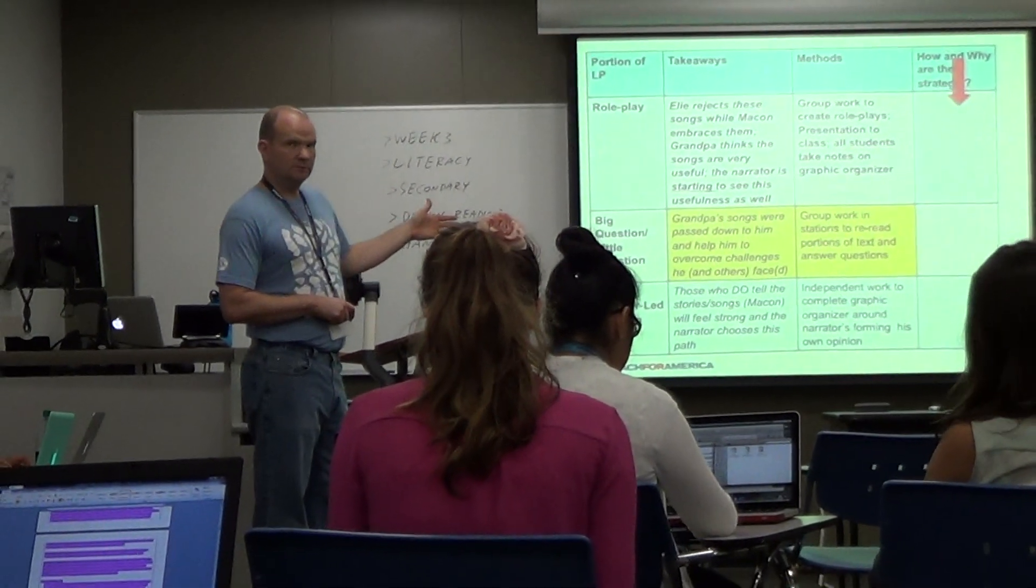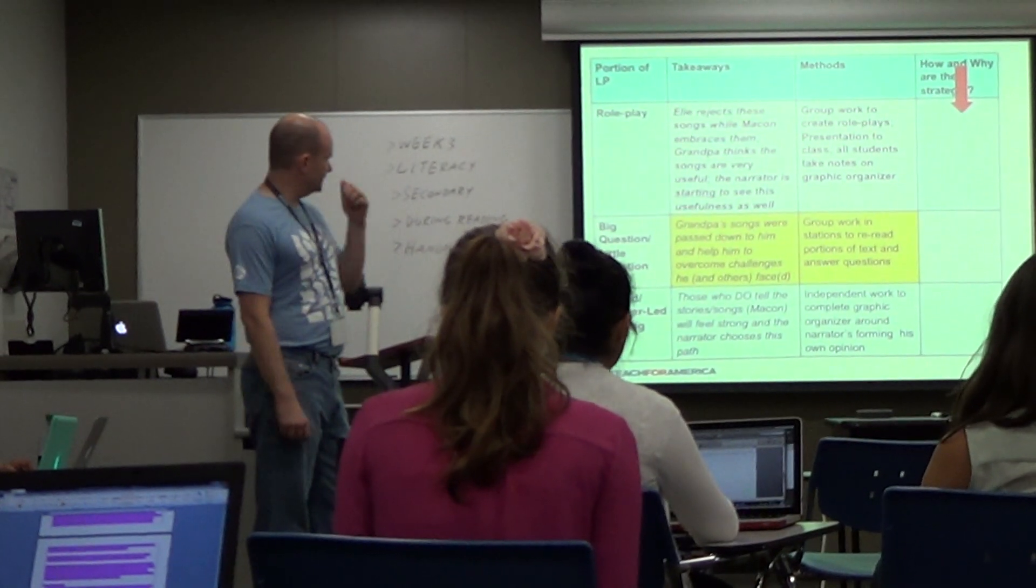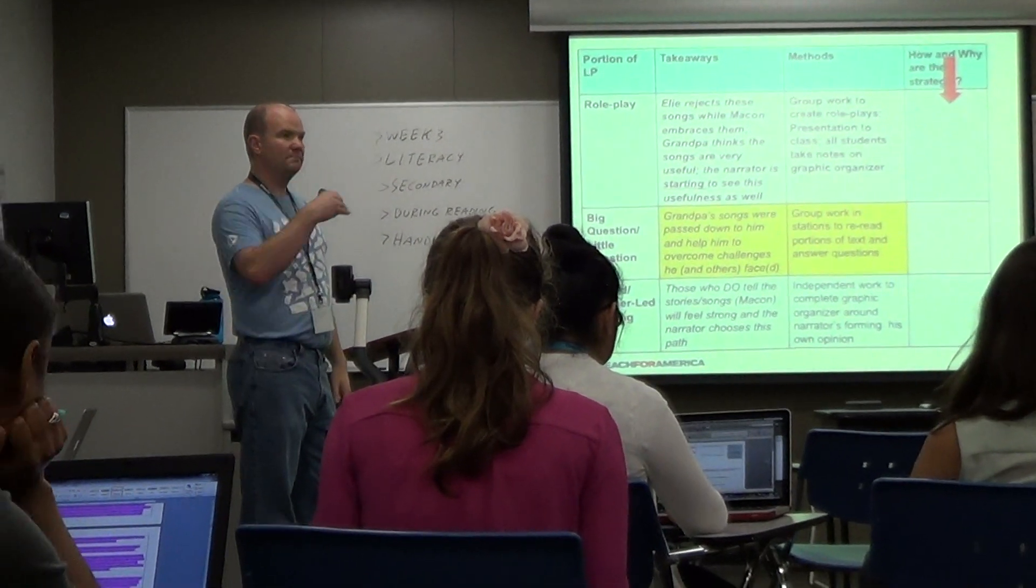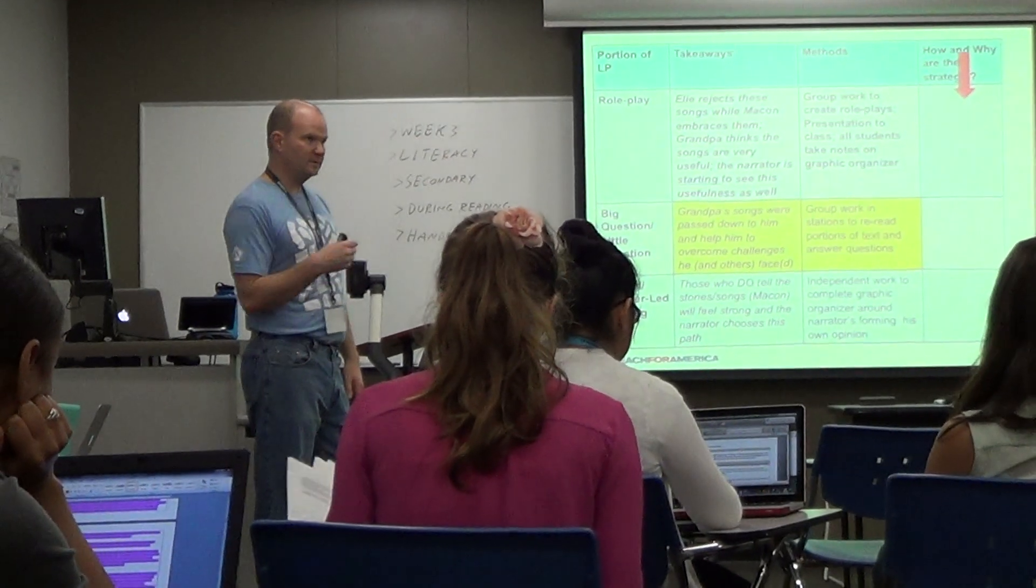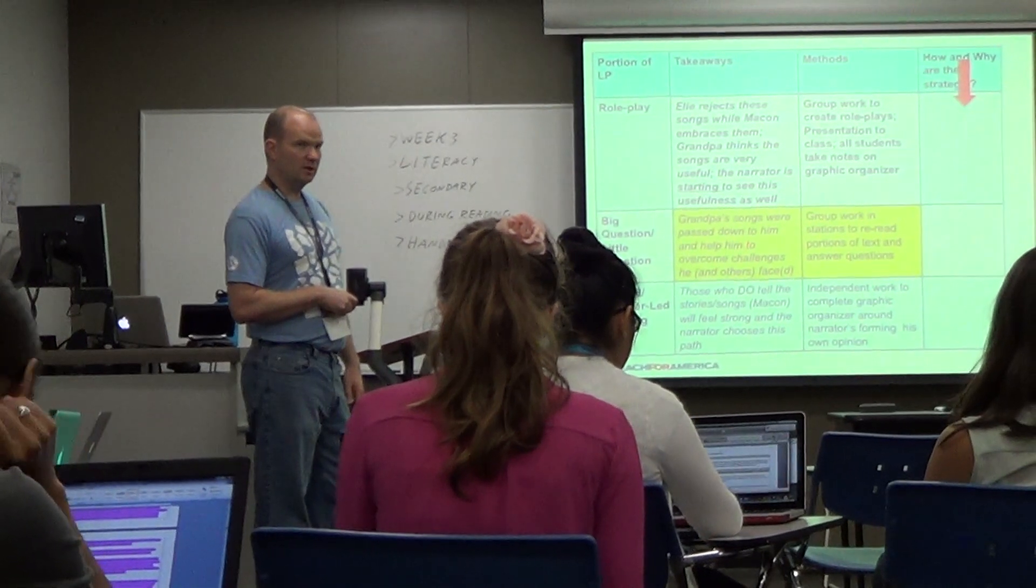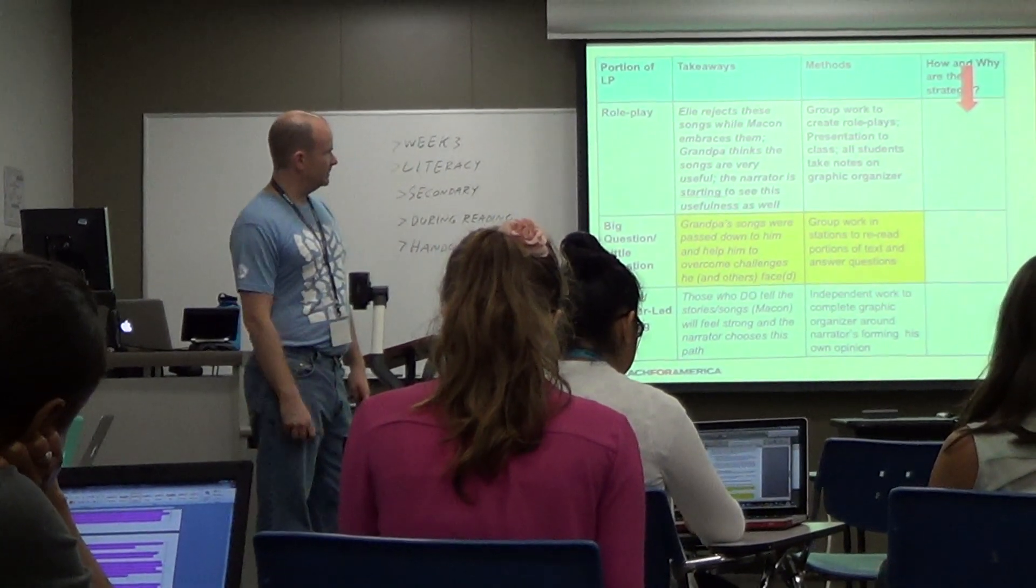Then in yellow, a few pages down, the next during reading method is big questions, little questions. They have them moving around the room to purposefully re-read text and come up with answers to questions that lead to the culminating question.